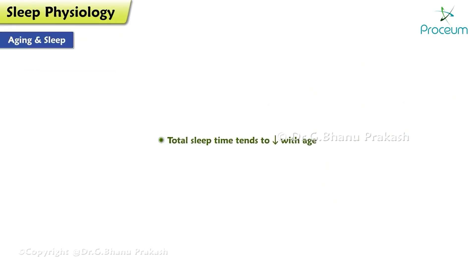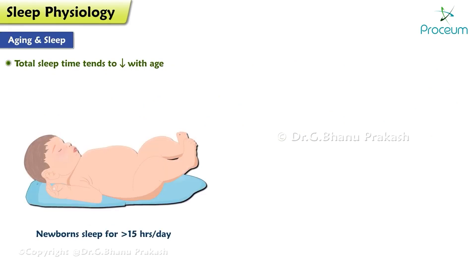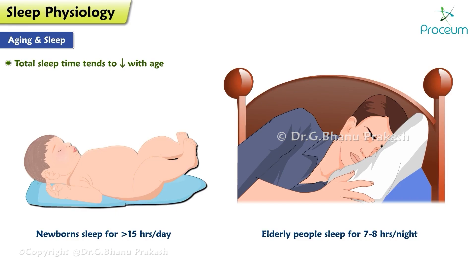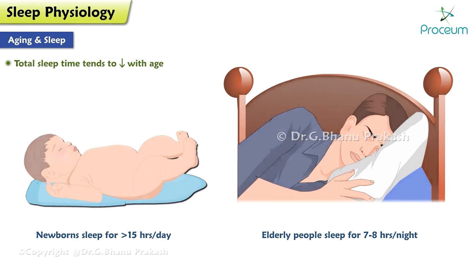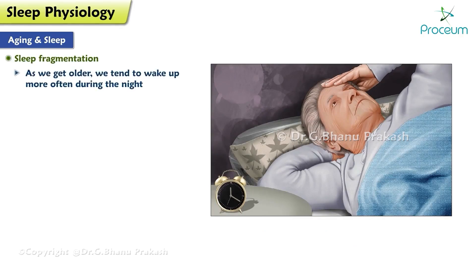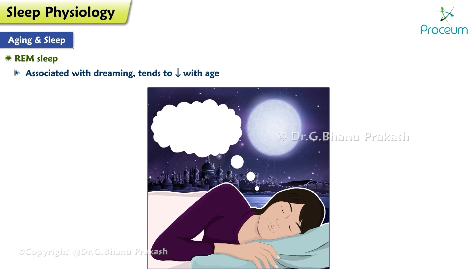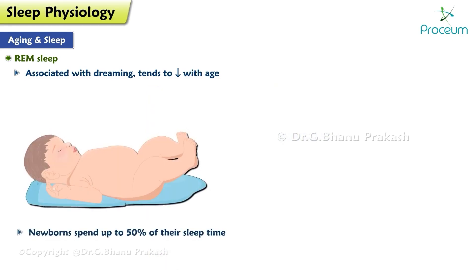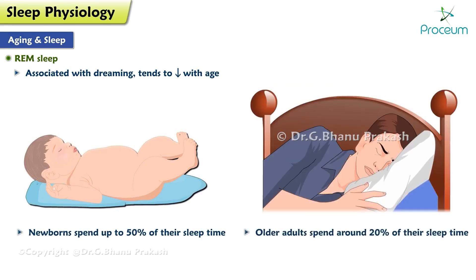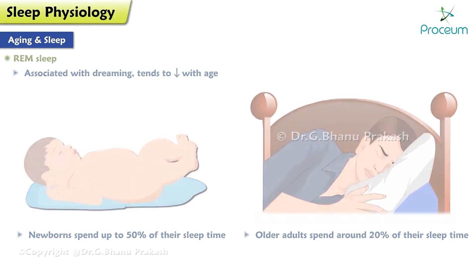Aging and sleep: Total sleep time tends to decrease with age. While newborns may sleep for more than 15 hours per day, elderly people may only sleep for seven to eight hours per night. As we get older, we also tend to wake more often during the night, leading to a fragmented sleep pattern with less time spent in each sleep cycle. REM sleep, which is associated with dreaming, tends to decrease with age — newborns may spend up to 50 percent of their time in REM sleep, while older adults may only spend around 20 percent in this stage.